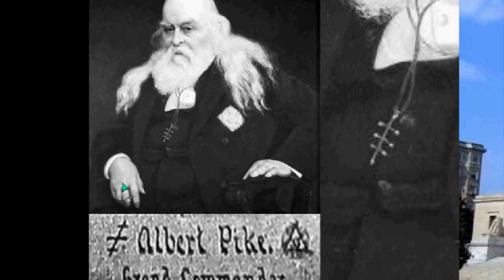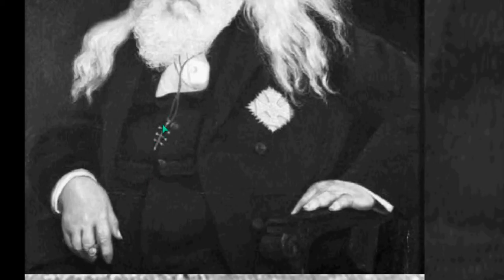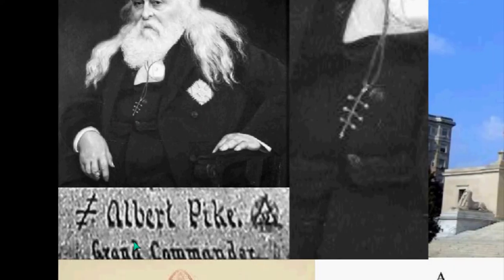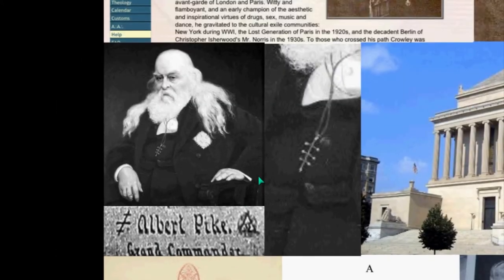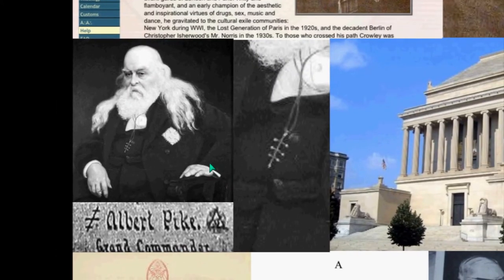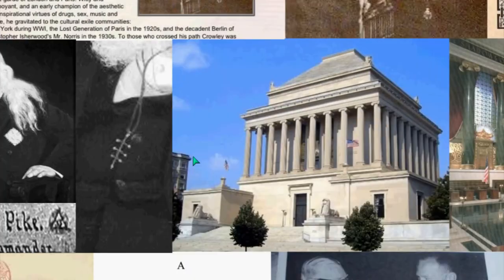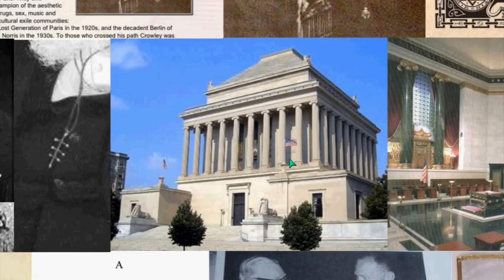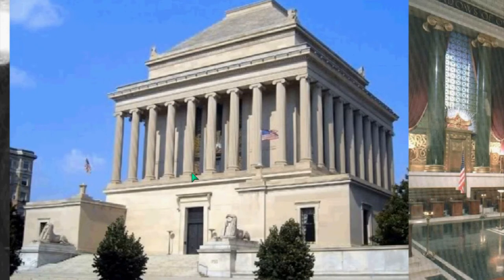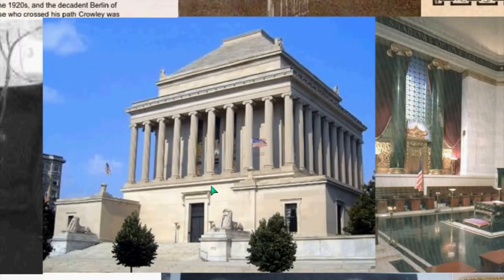Albert Pike is known as the Pope of Freemasonry. You can see that he uses this non-adorned triple cross on his necklace. Albert Pike, Grand Commander, is known as a Confederate General of the South. He is also involved with the KKK. And he is the only man ever laid to rest — his tomb is actually within this Masonic building. This is the Washington DC Lodge. It is 13 blocks from the White House.